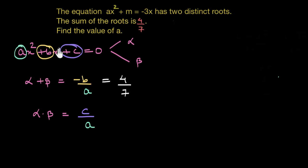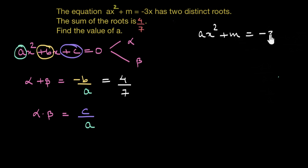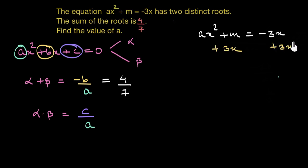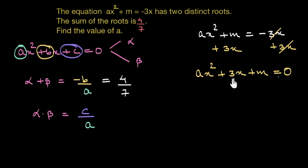Make sure your quadratic equation is in standard form. In this case, we have ax squared plus m equal to negative 3x, so we need all the terms on one side of the equation. In order to do that, we add 3x on both sides — plus 3x and plus 3x — so negative 3x and positive 3x cancel out, leaving ax squared plus 3x plus m equal to 0.